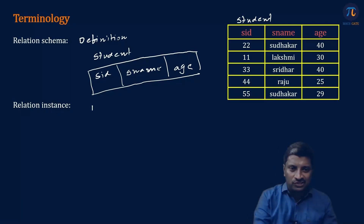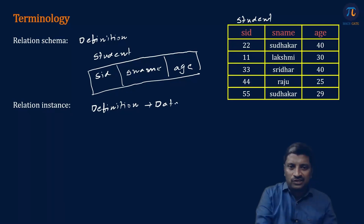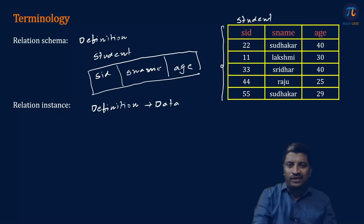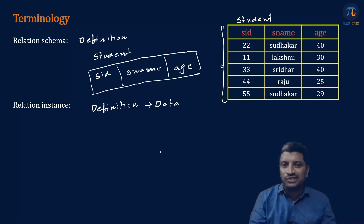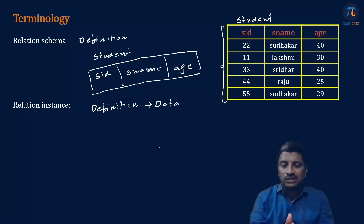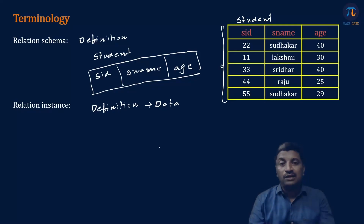The next one is relation instance. What is relation instance? Definition plus data is called relation instance. So the entire table is called the relation instance of a relation. One important point to note is that the relation instance of a relation may change from time to time, because the records of a relation may be updated from time to time.